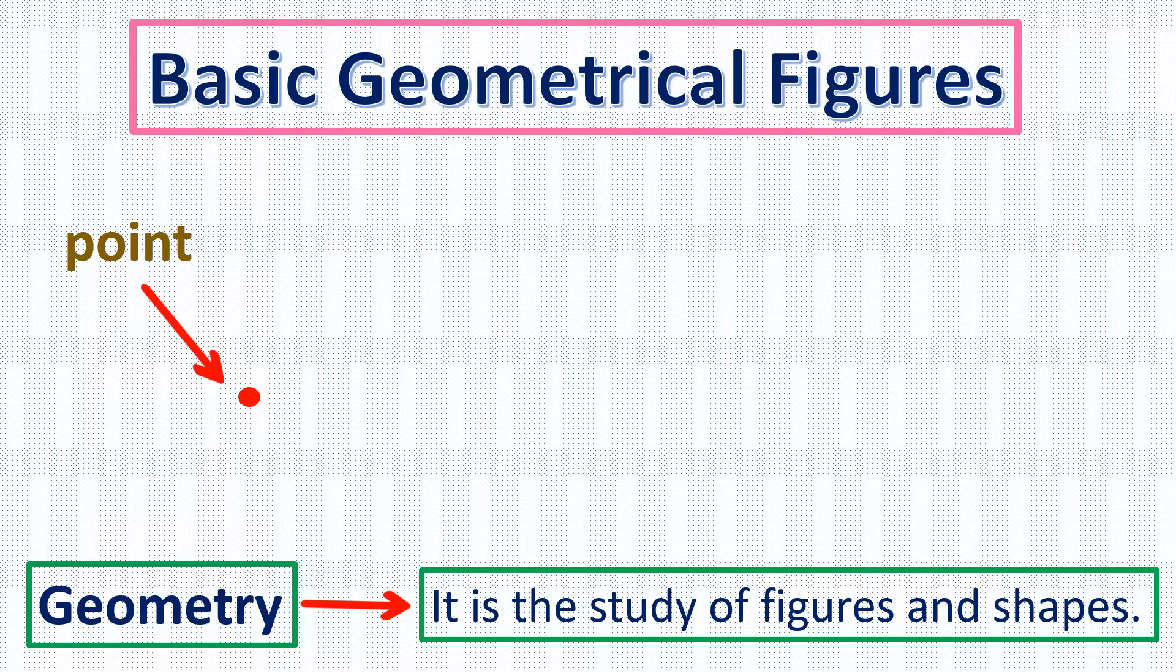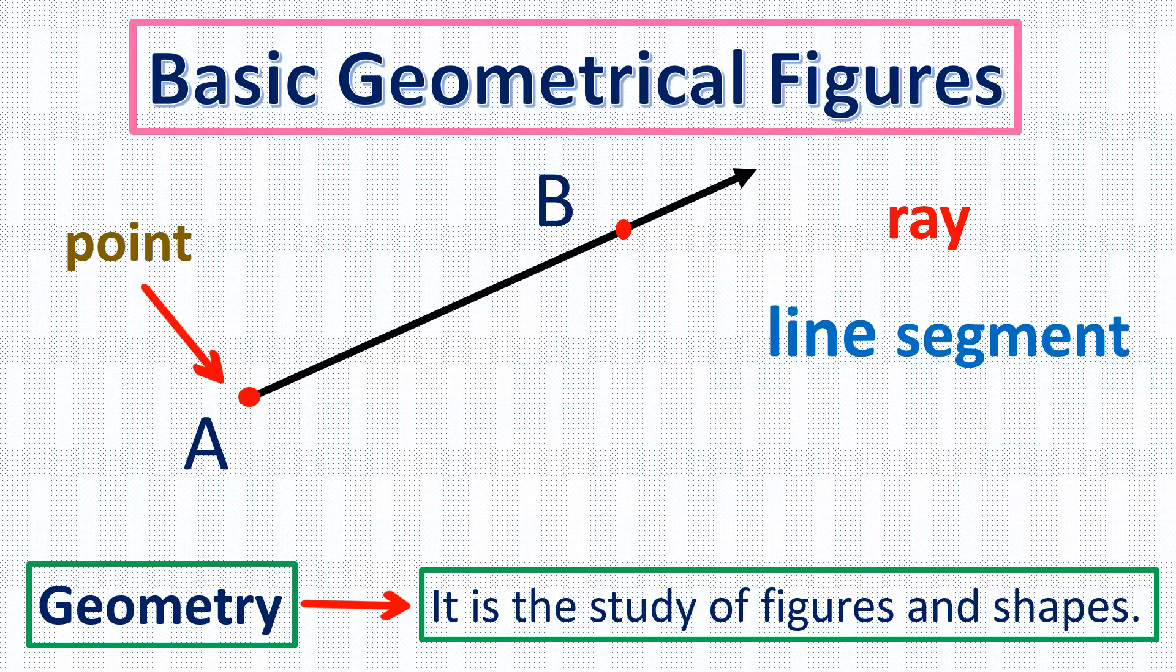So right here we have a point and let's name this point as point A. Let's have another point and we'll name it point B. If we connect point A and point B, we'll have what we call a line segment. Now, if we extend one of these endpoints, we can go either way. Suppose we will extend from B. Now we no longer have a line segment but instead we call it a ray. Let's have another point and name this point C. Then create another ray. Notice that these two rays meet at the same point where a corner is formed and this corner is called an angle. In a short while, we'll talk about each figure one by one.